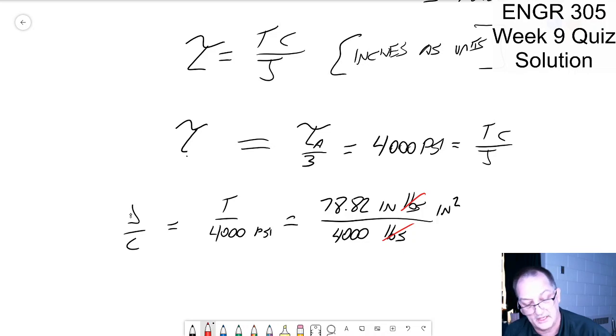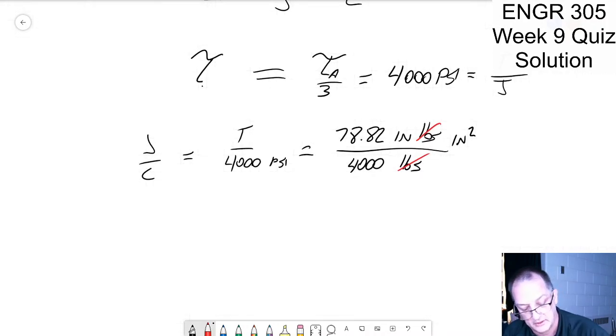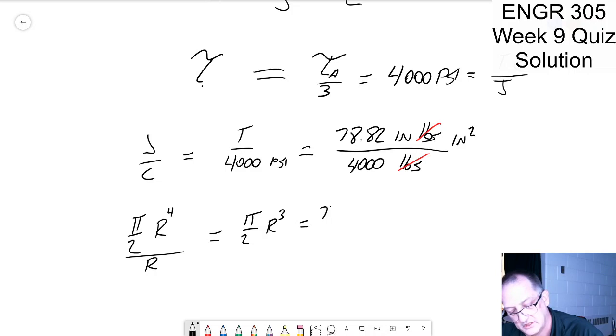And j over c, yeah that should be inches to the third. So this is going to be pi over two, radius to the fourth divided by the radius, or equal to pi over two, 2 r to the third equals 78.82 over four thousand inches cubed. r cubed equals two over pi, 78.82 over four thousand inches cubed.